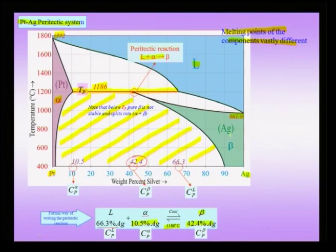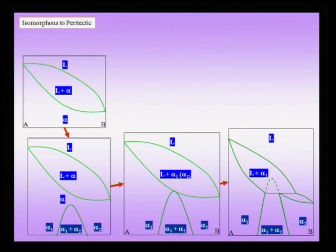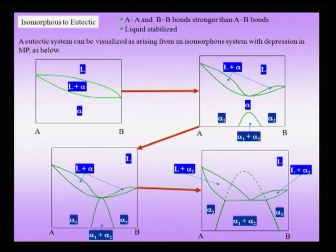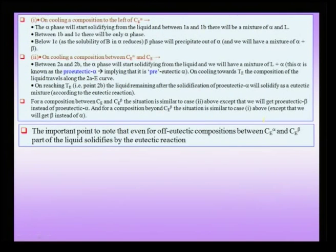All single-phase fields in this diagram are marked in different colors: the liquid phase above, the alpha phase and the beta phase. We can also consider slow cooling of various compositions to figure out the resulting products. We will try to understand how the peritectic system can be visualized as evolving from an isomorphous system — similar to what we did for the eutectic system, where we considered a depression in the freezing point with phase separation at low temperatures.